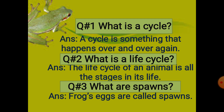In this lesson, you learned what is a cycle. A cycle is something that happens over and over again. Then you learned about the life cycle — what is a life cycle?